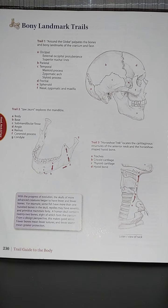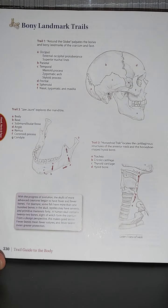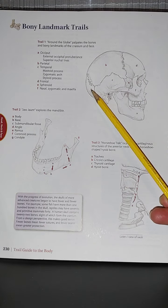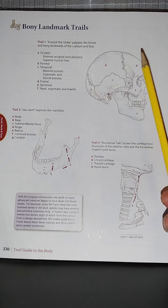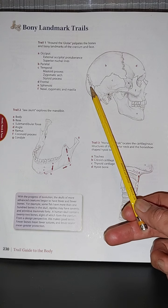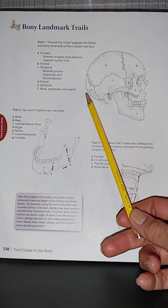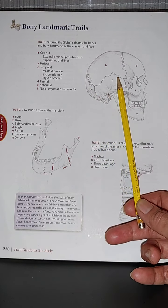We are at page 230 and we are still on the trail guide to the body, this time featuring bony landmarks and how to access them. There are different trails. Trail one, we're going to go around the globe, covering the bones and bony landmarks of the cranium and face. Starting from the occiput, the EOP — external occipital protuberance — heading to the superior nuchal line and then to the parietal bone and temporal bone.